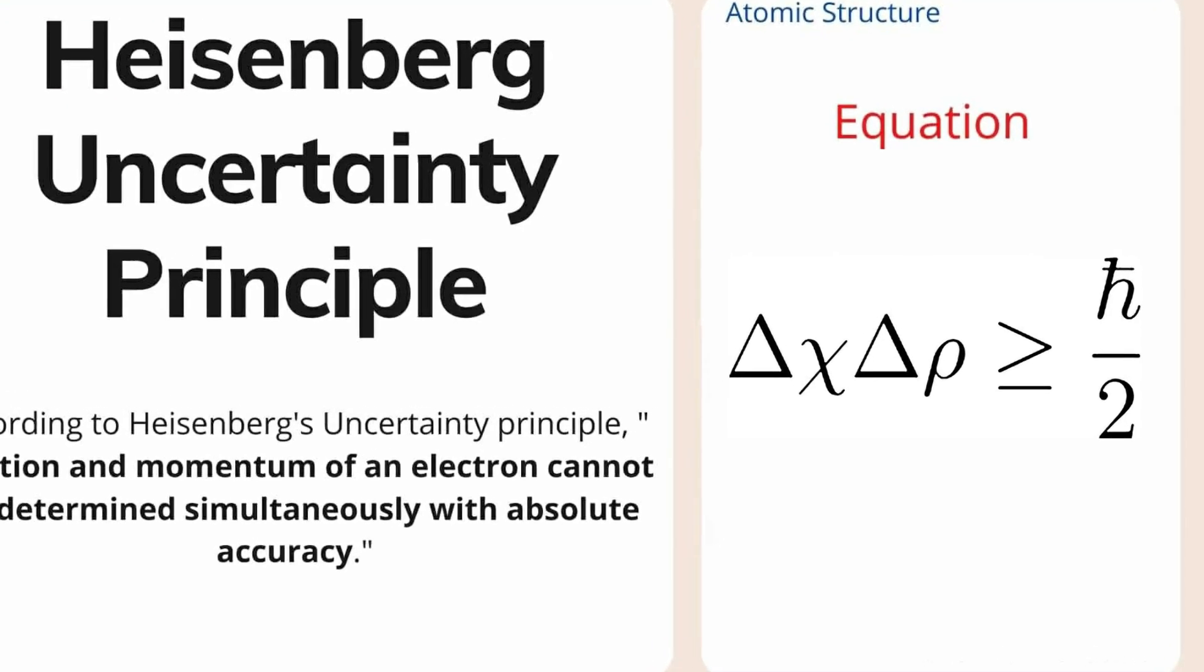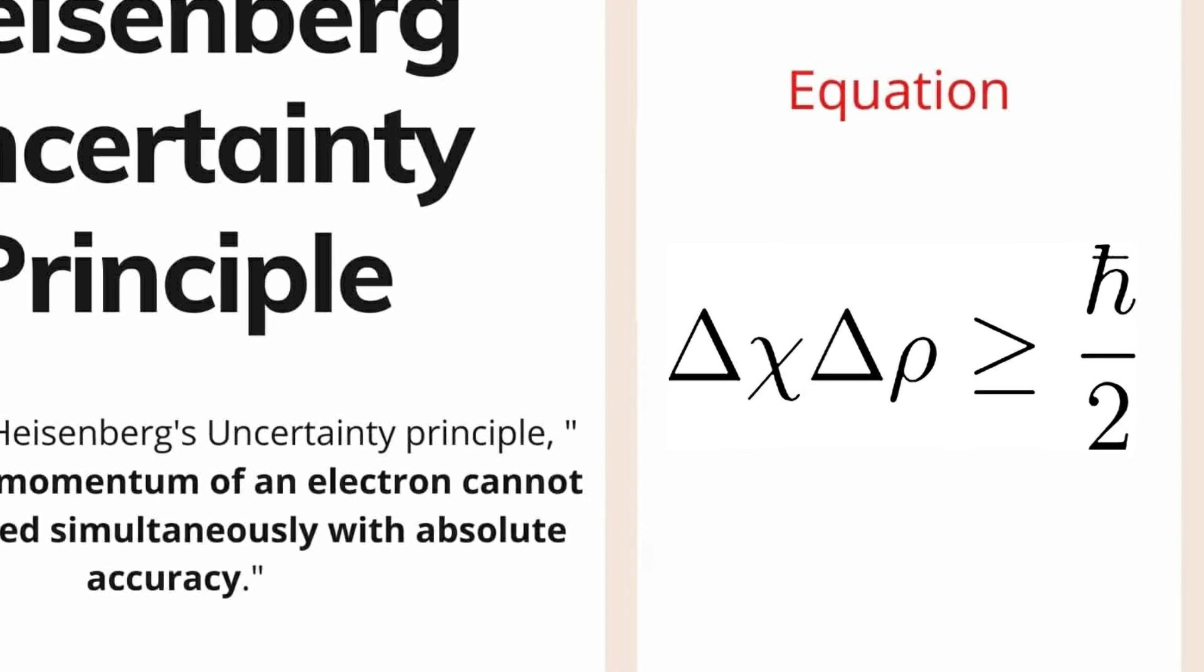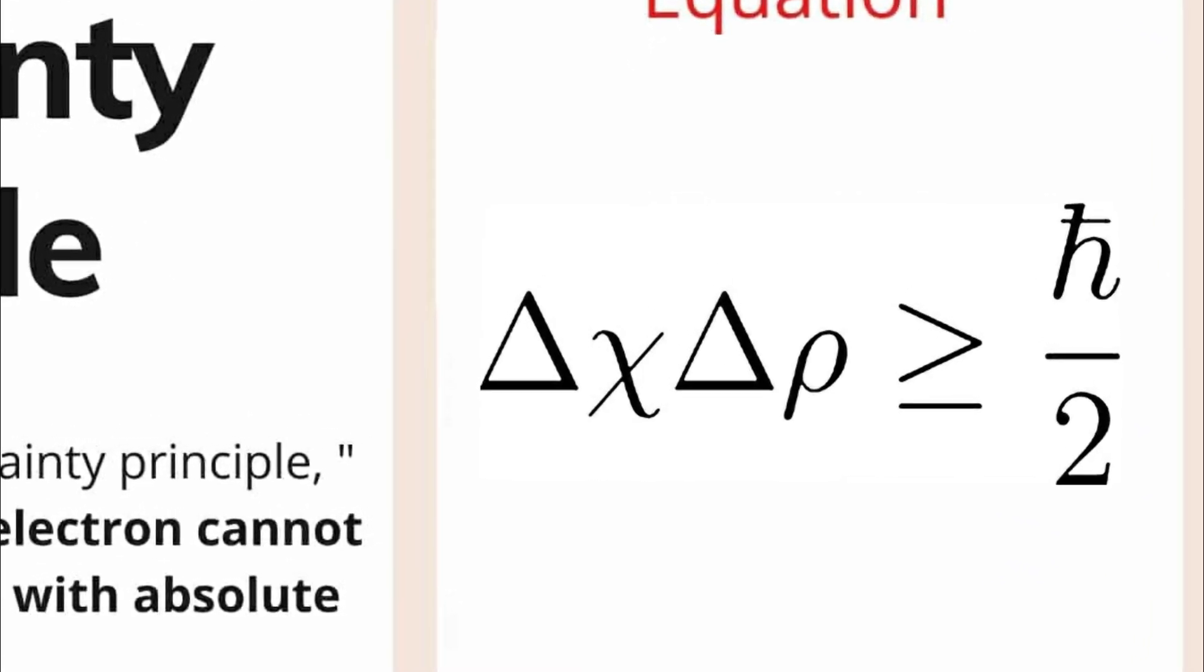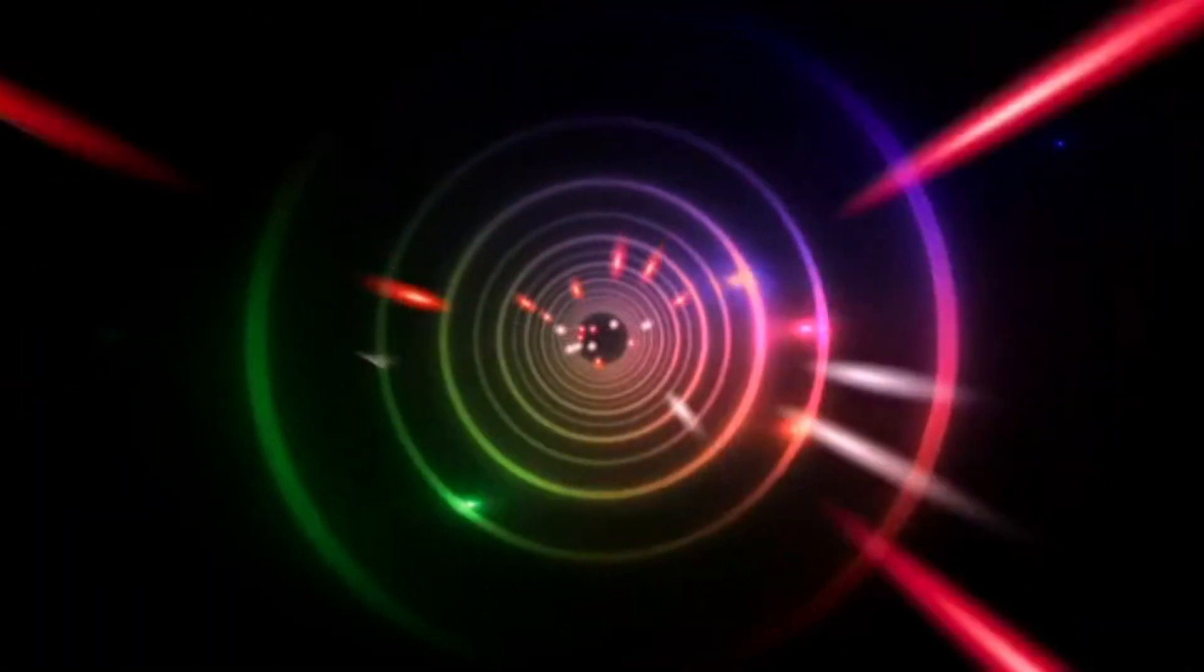The Uncertainty Principle, formulated by Werner Heisenberg, suggests that there are inherent limits to the precision with which certain pairs of properties, such as position and momentum, can be simultaneously known. This introduces an element of fundamental uncertainty into the behavior of particles, leading some to question whether the future can truly be predetermined.